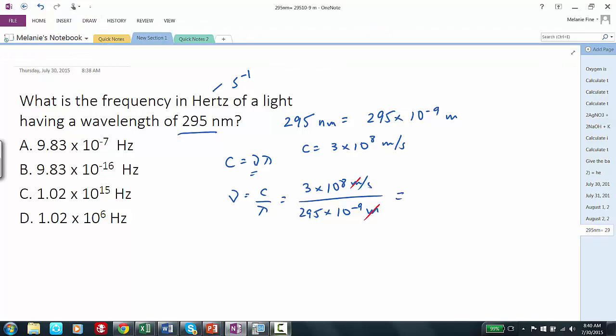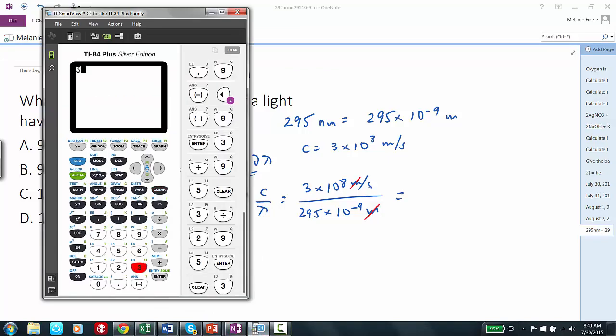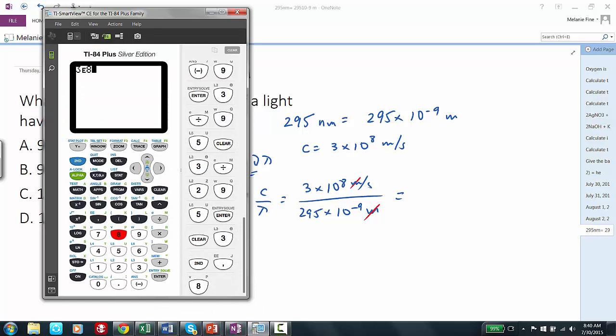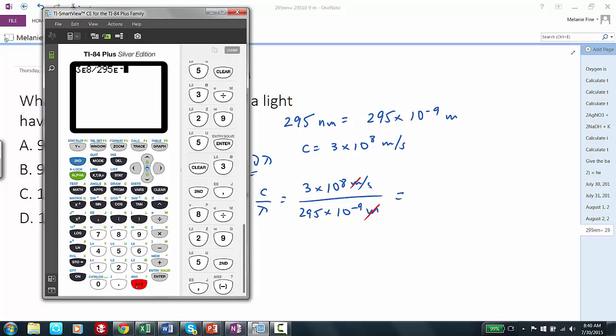Let's do the math in our calculator: 3 ee 8 divided by 295 ee negative 9. We get, in three sig figs,